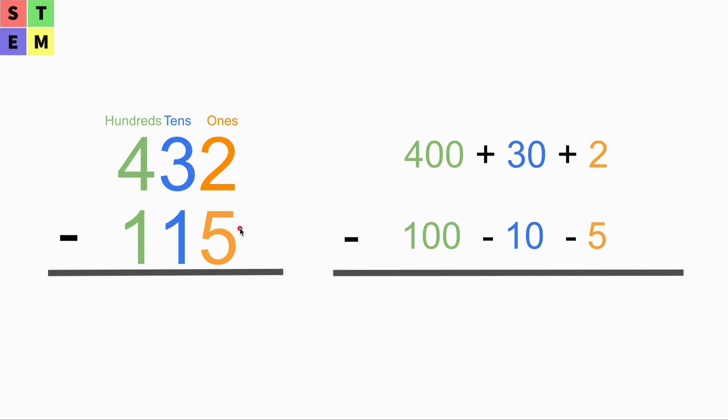Let's look at the place values. We've got the ones place - 2 here, 5 here. Tens place - we've got 3 here, 1 here. And hundreds place - we've got 4 here and 1 here.